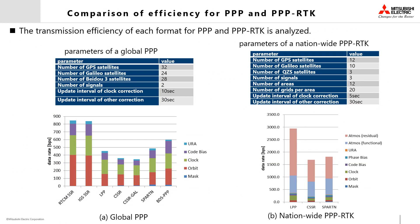We then compare the transmission efficiency for each format for PPP and PPP-RTK. The left figure shows the required data rate for a typical global PPP service. It shows that corrections for 84 satellites need less than 400 bps for Compact SSR, which is more efficient than other formats.